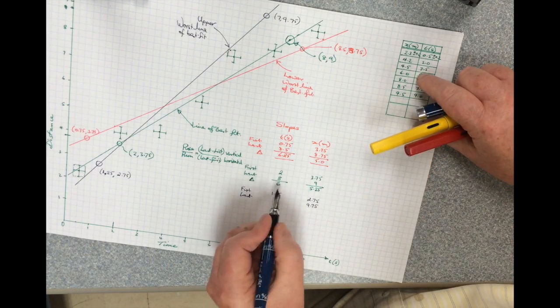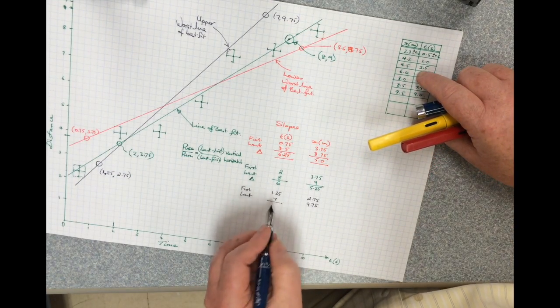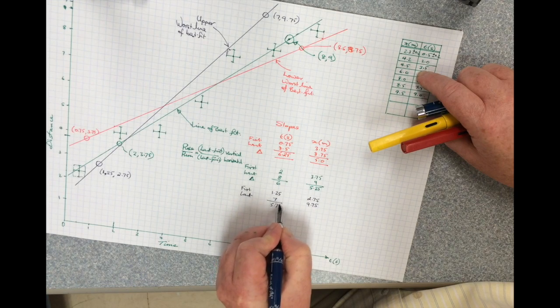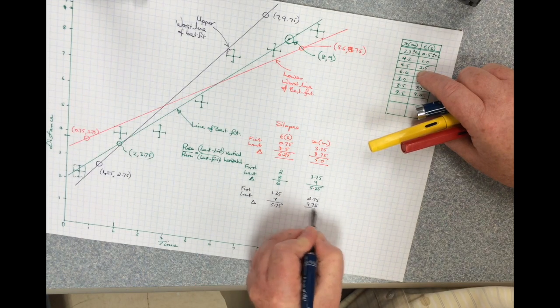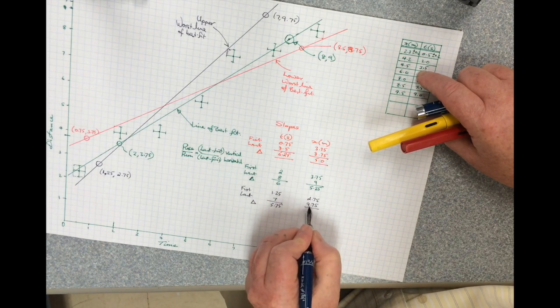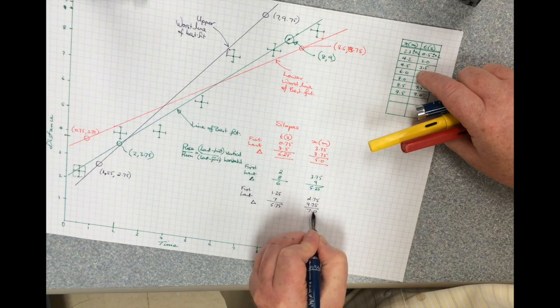On this one here, 7 minus 1.25, which is 5.75. And here, 9.75 minus 2.75 is 7.